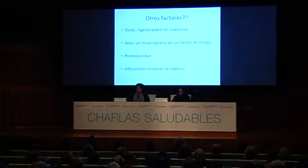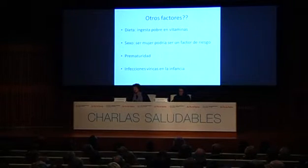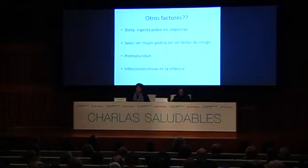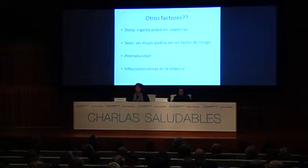Also prematurity — something very novel. Today we have many premature and very premature babies. The lung must be cared for from birth. Premature babies probably already have some added problem, and we must protect them from exposure to toxics — passive smoking, for example — as this could be a risk factor for developing this disease in the future. It also appears that some viral diseases in childhood may predispose to COPD in adult life.